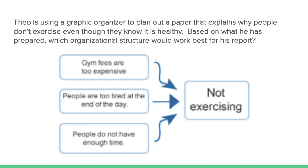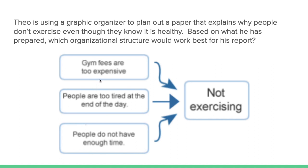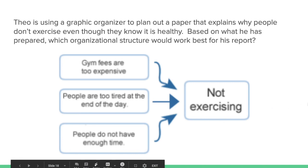Last one: Theo is using a graphic organizer to plan out a paper that explains why people don't exercise, even though they know it is healthy. Based on what he has prepared, which organizational structure would work best? We have: gym fees are too expensive, people are too tired at the end of the day, and people do not have enough time. Those reasons explain why people are not exercising. Cause and effect — because of those causes, the effect is they are simply not exercising.